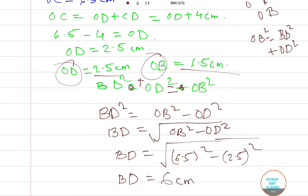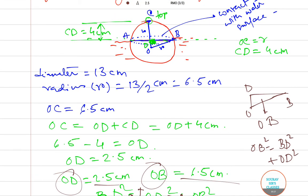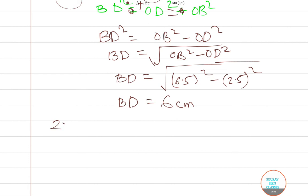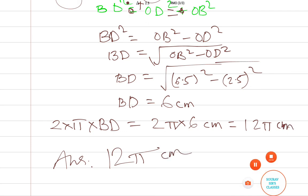The circumference of the circle in contact with the water surface equals 2π times BD, which equals 2π times 6 centimeters, giving 12π centimeters. So the answer is 12π centimeters. Thank you.